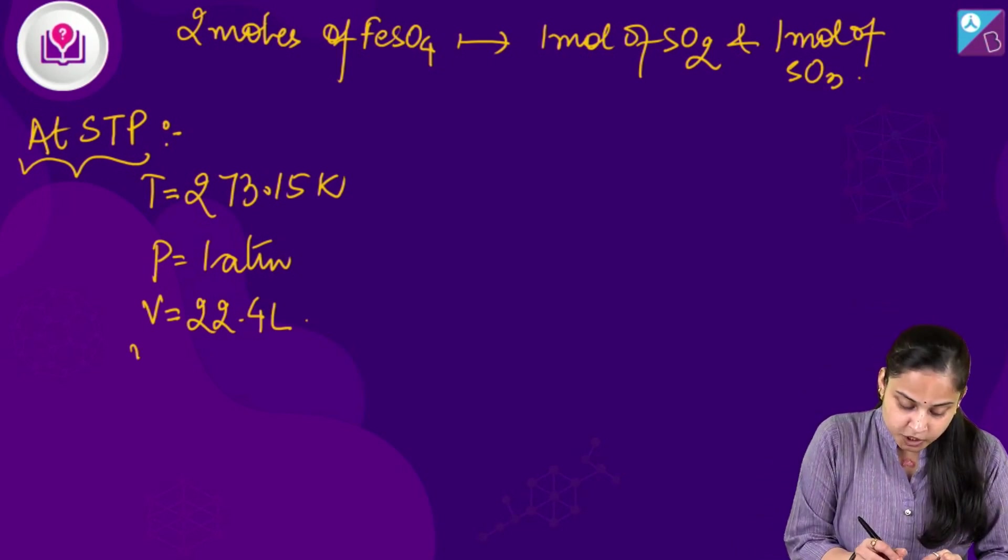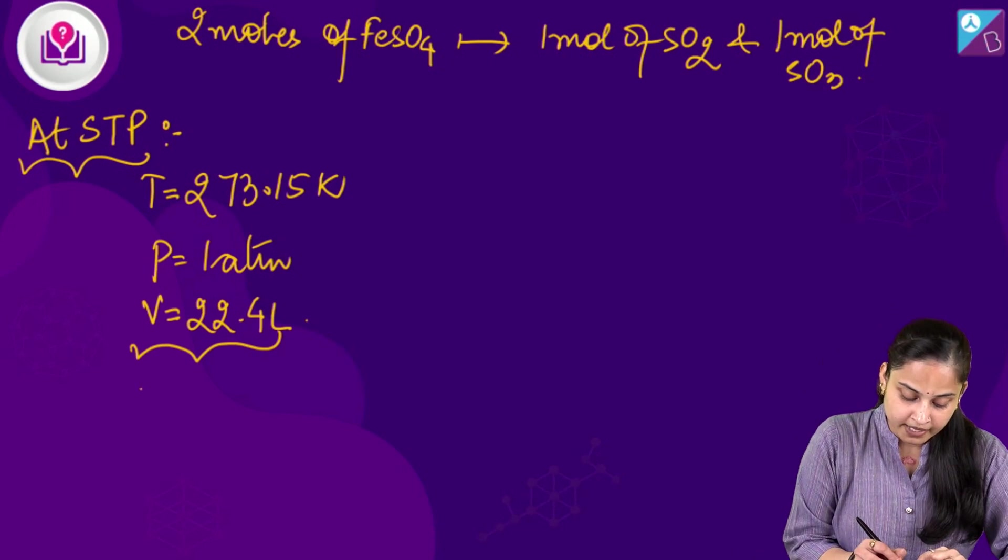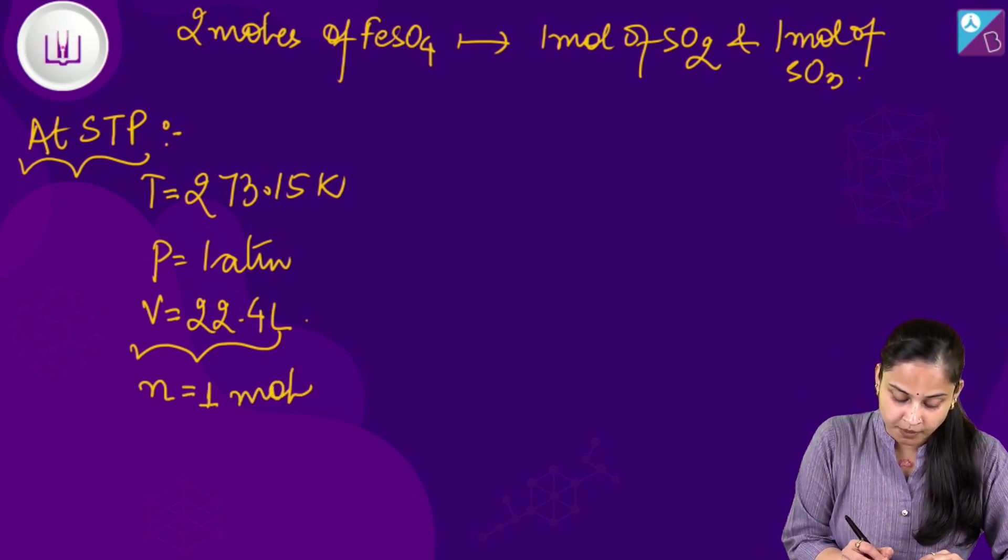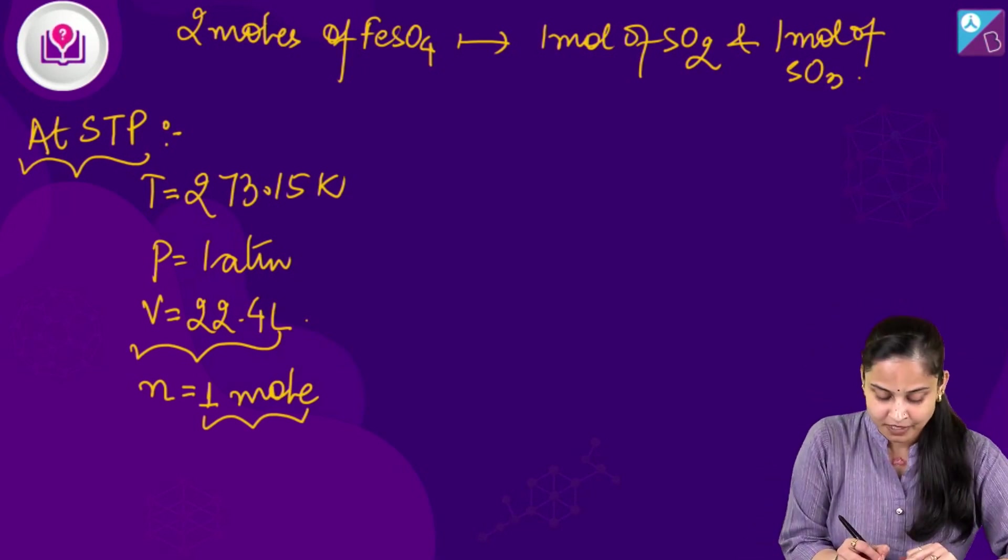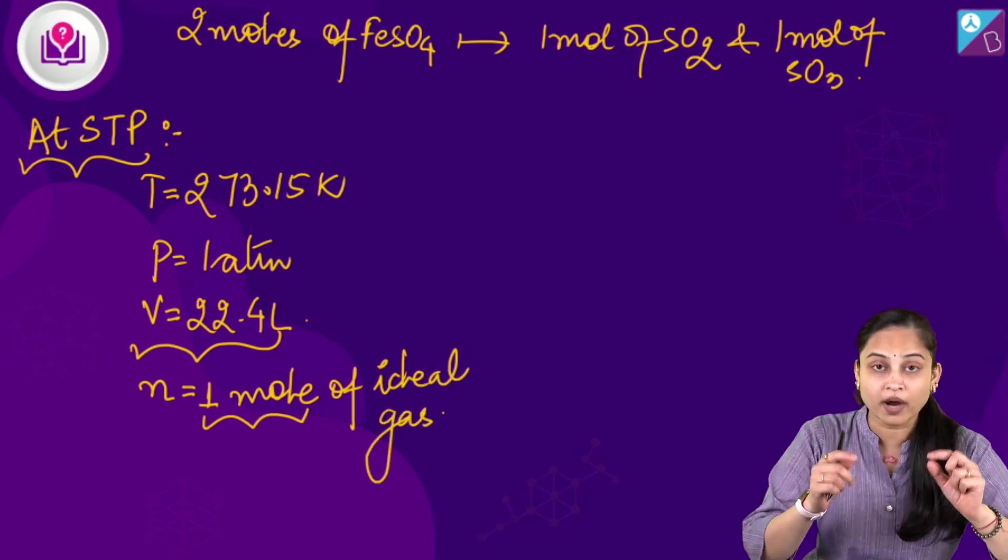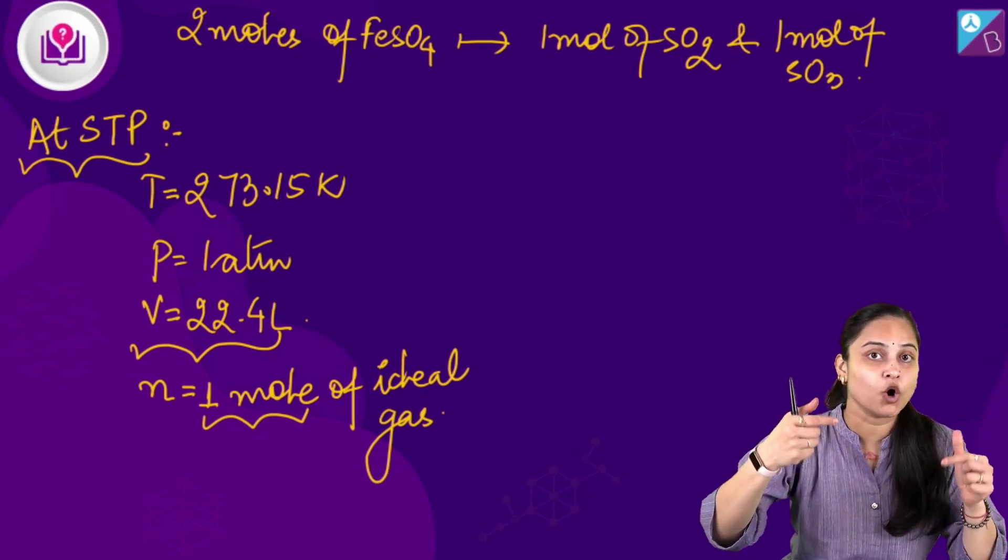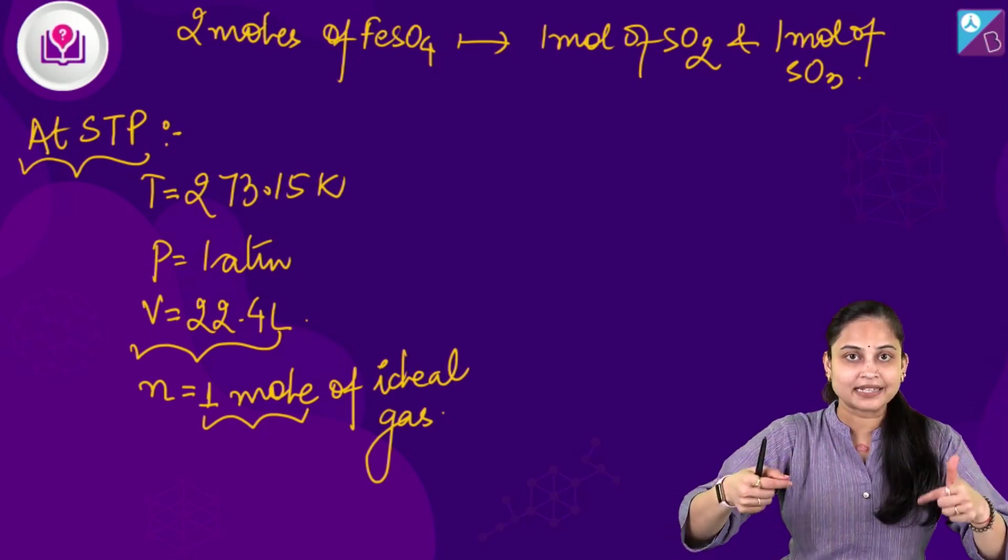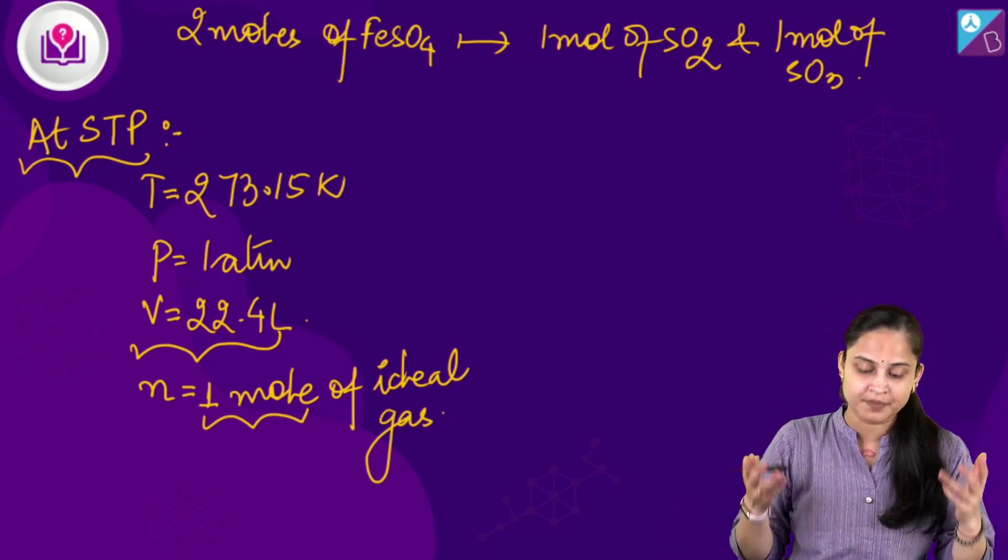That means this particular volume equals 22.4 litres when number of moles equals 1 mole of ideal gas. 1 mole of ideal gas basically occupies 22.4 litres of volume at the standard condition.